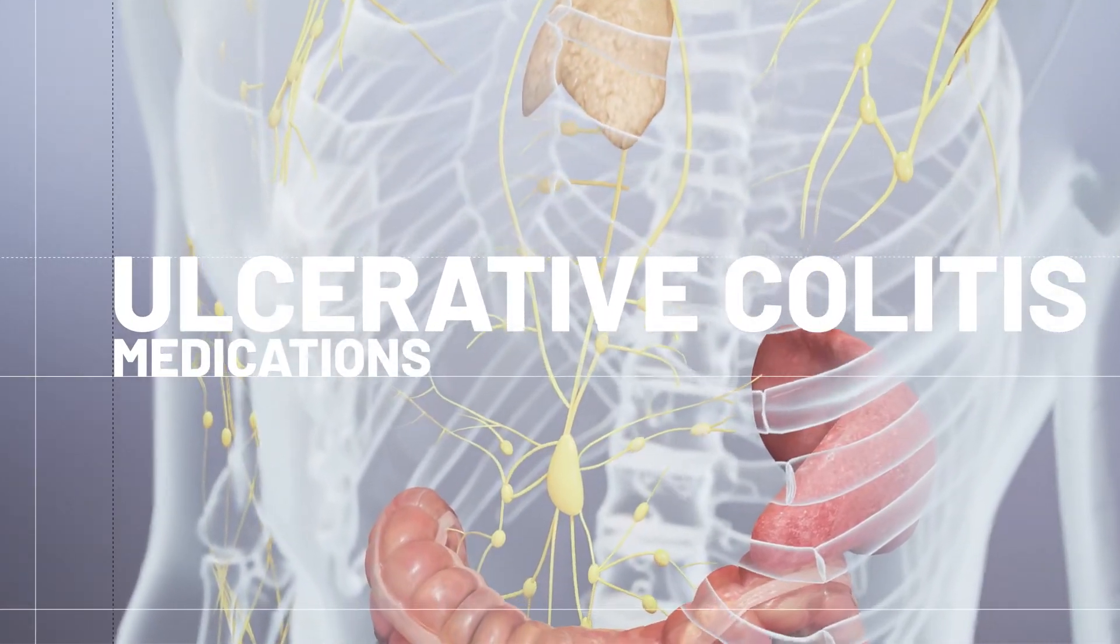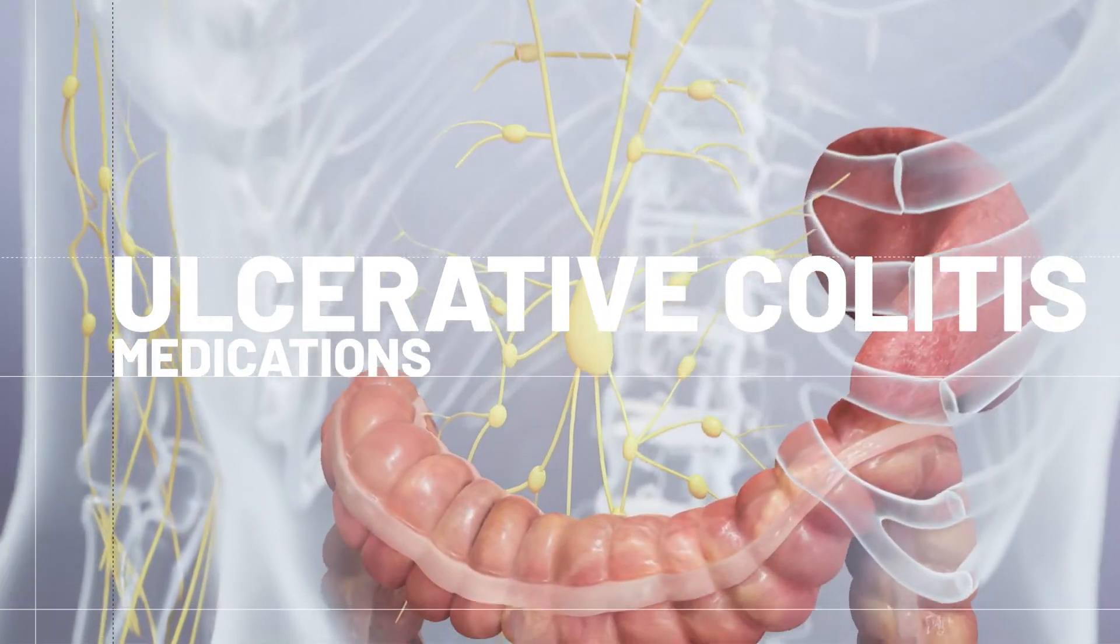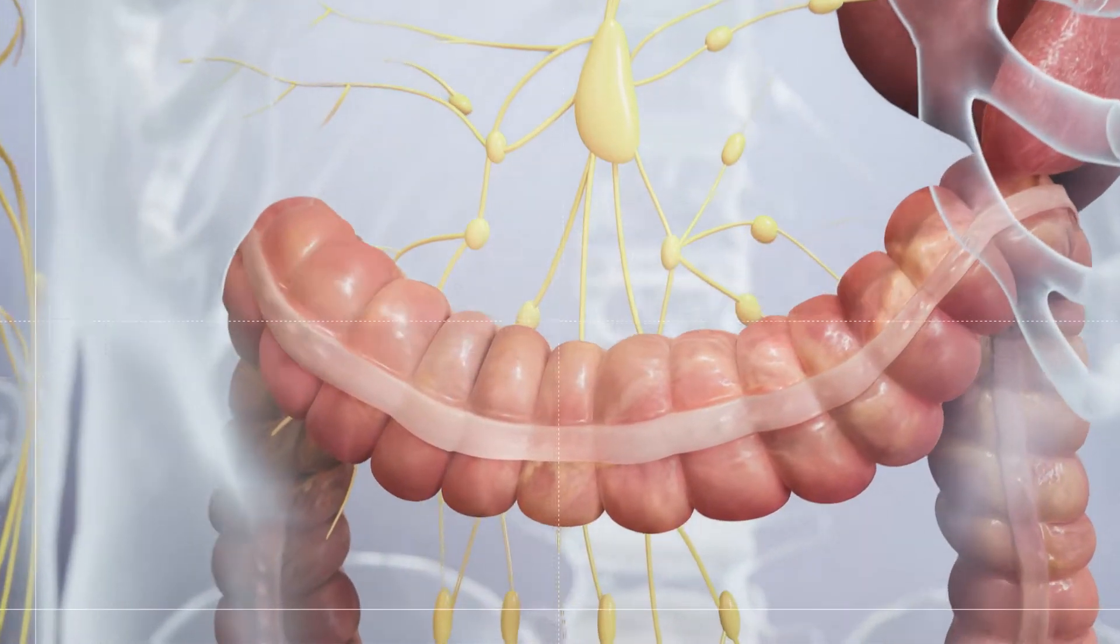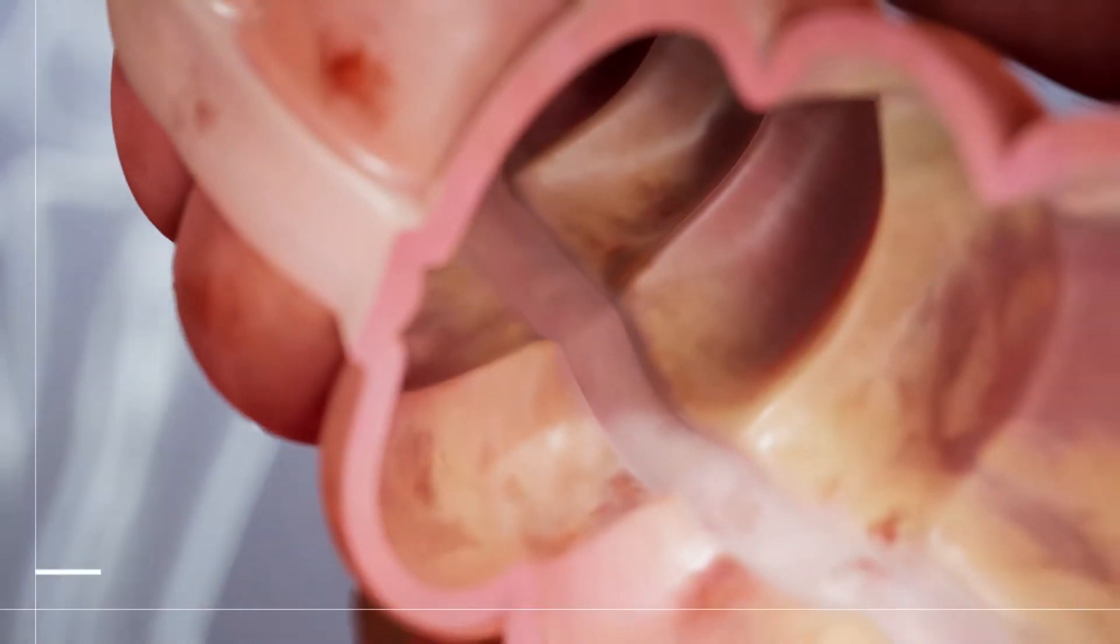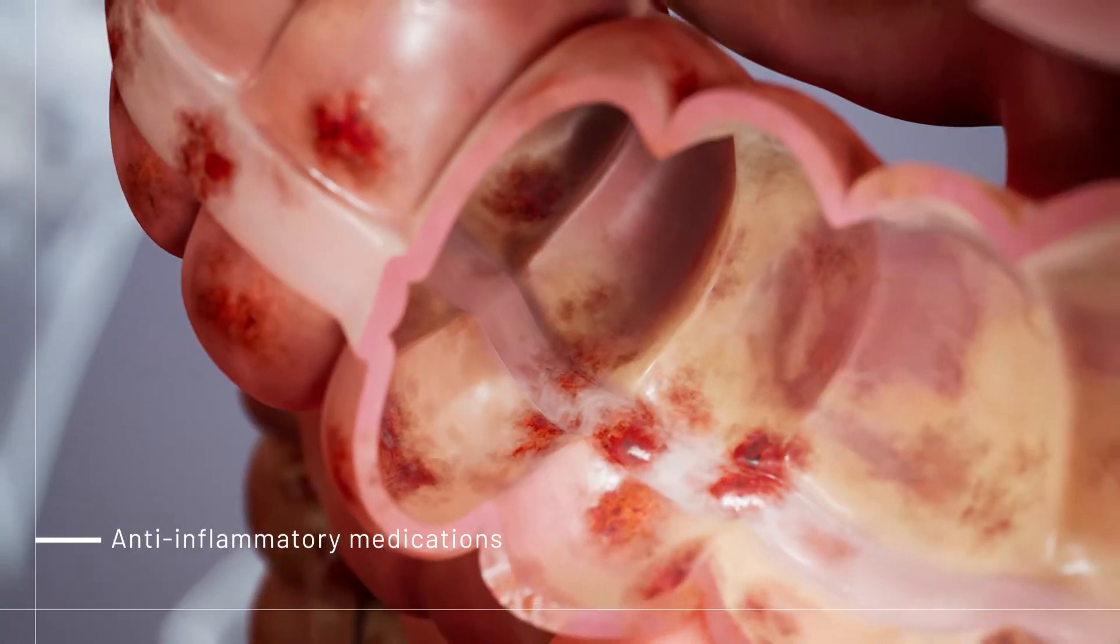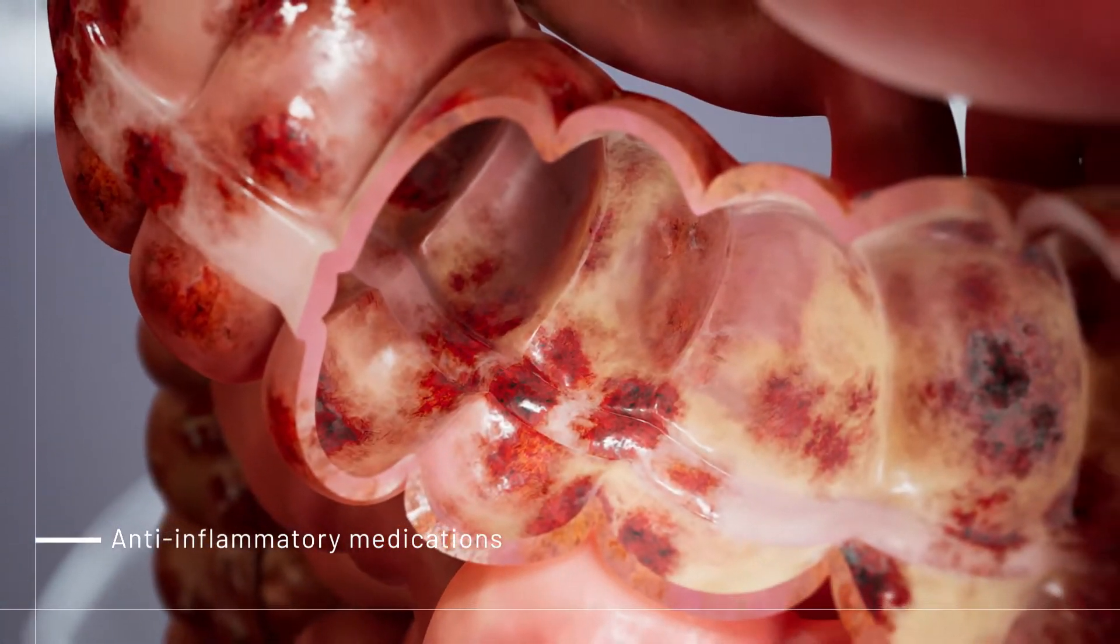There are different medications to help your body fight ulcerative colitis, and the way they work varies. For mild to moderate flare-ups, anti-inflammatory medications are often the first line of treatment.